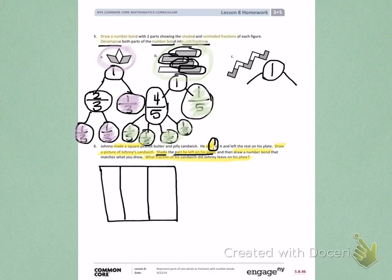He ate one-third. So, if he ate one-third, this would be what he ate. One-third. Johnny left on his plate the section in the middle and the section on the end.